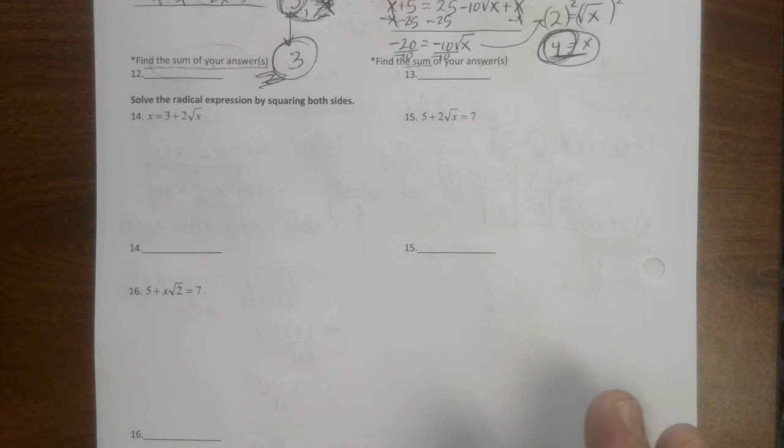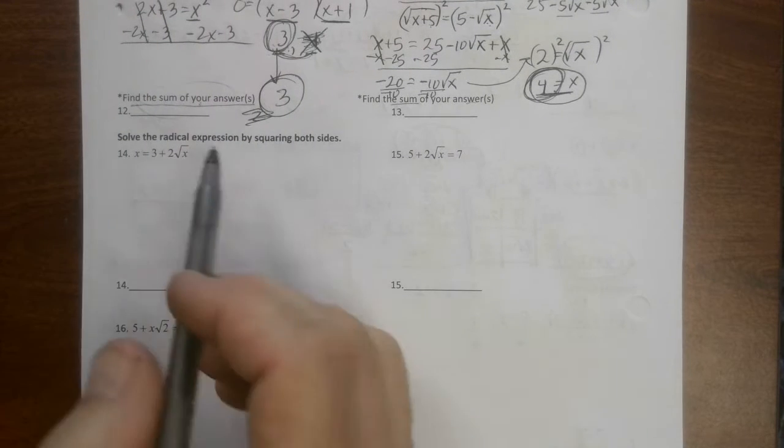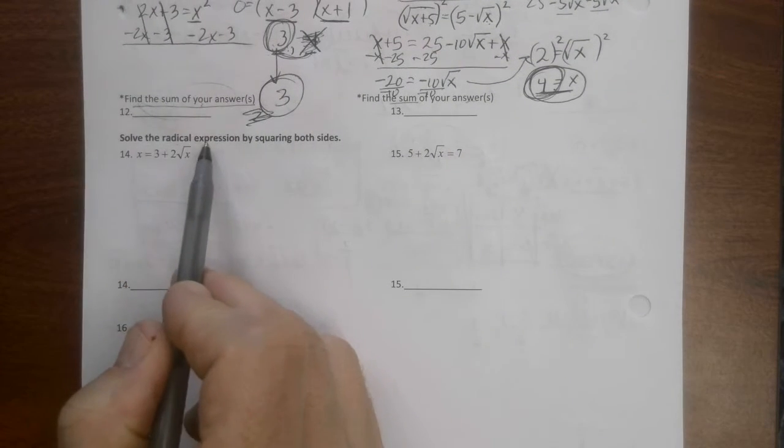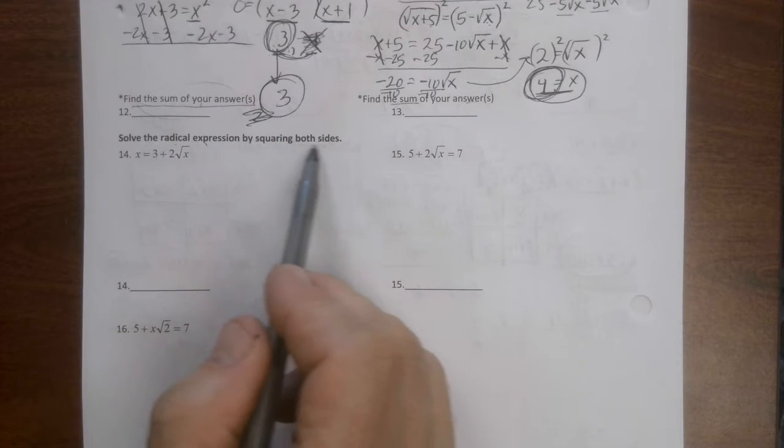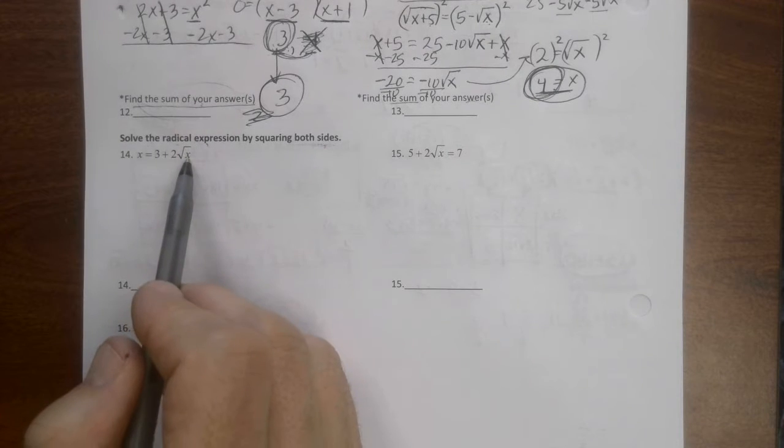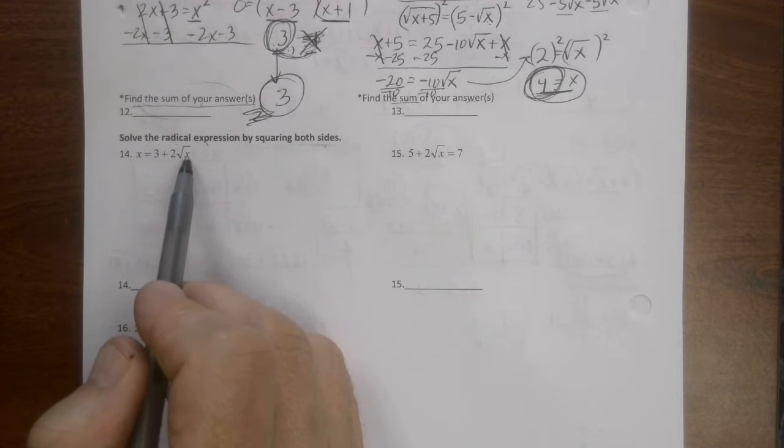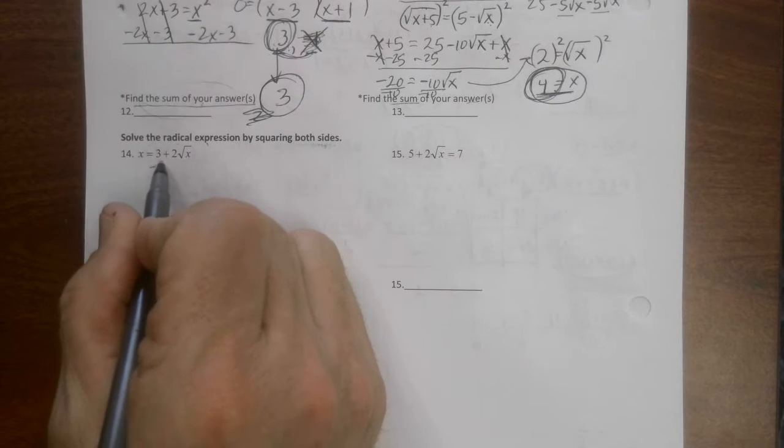Alright, last three problems. So this says solve the radical expression by squaring both sides. Now if it's not necessary to square both sides, we're not going to. Keep that in mind. You see that square root? There's only really one way to get rid of that, and that's by squaring both sides. So what we're going to do is subtract...